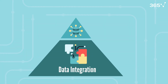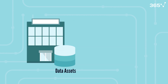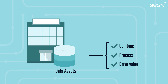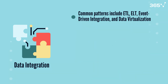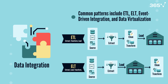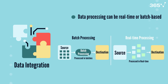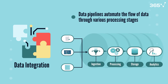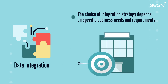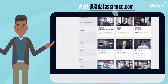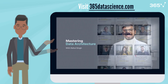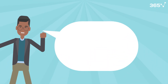Data integration is the cornerstone of modern data architecture, enabling organizations to combine, process, and derive value from their data assets effectively. To recap: data integration connects different data sources into unified systems; common patterns include ETL, ELT, event-driven integration, and data virtualization; data processing can be real-time or batch-based; data pipelines automate the flow of data through various processing stages; and the choice of integration strategy depends on specific business needs. Thank you for joining this video on data integration fundamentals. Check out our complete course catalog at 365datascience.com for more in-depth training. Until next time, keep learning!